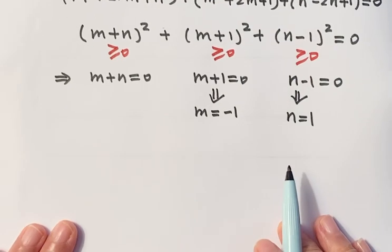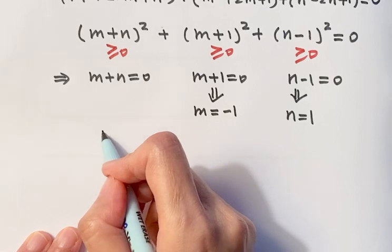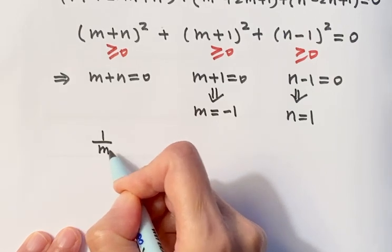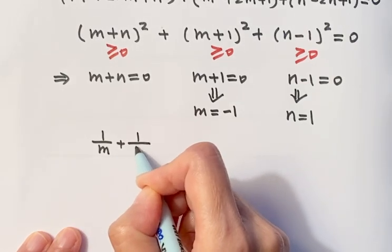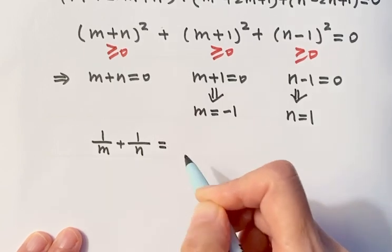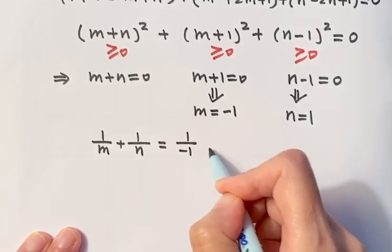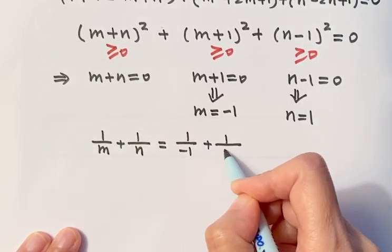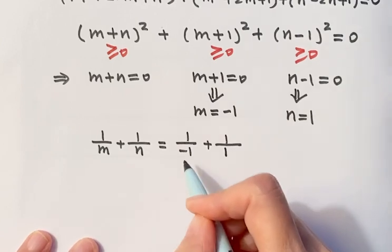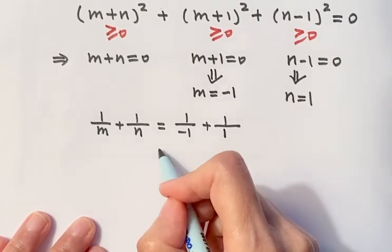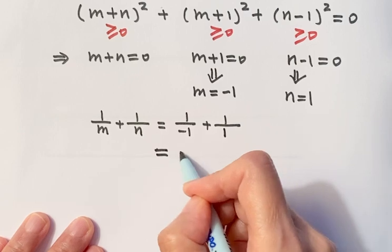Okay, so now we want to know what is 1 over m plus 1 over n. Just 1 over negative 1 plus 1 over 1. So negative, positive, so then this one just equals 0.